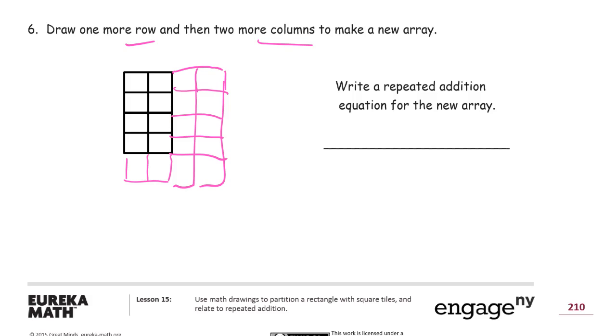Write a repeated addition equation for the new array. So I could look at rows or columns here, and I have one, two, three, four, five. Five in a column and four in a row. Fives are easier to add than fours because you can count by fives, but not a lot of us are good in second grade at counting by fours. So I'm going to add fives instead. And I have one, two, three, four of those. So five plus five plus five plus five, and that's five, ten, fifteen, twenty.